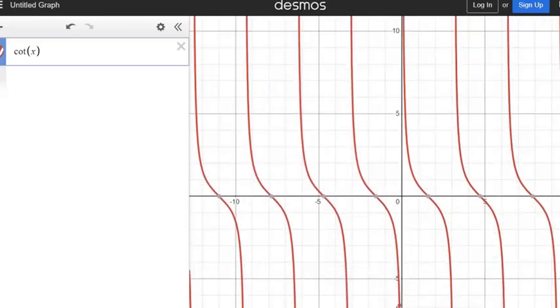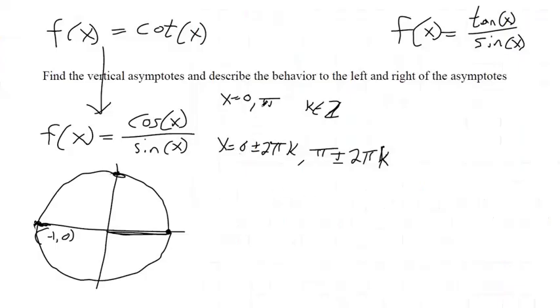So on the behavior to the left of the x equals zero vertical asymptote, it's approaching negative infinity. And the behavior on the right, the y values keep going up. So it's approaching positive infinity. So on the left of each of these vertical asymptotes, it's approaching negative infinity. And on the right, the limits are approaching positive infinity.